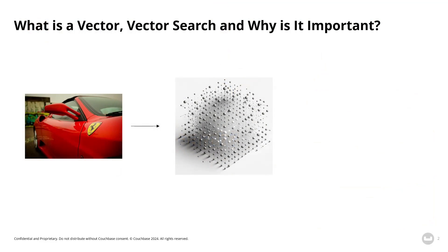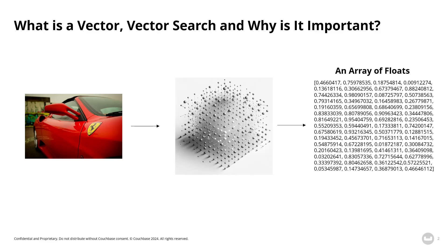So what's a vector, what's vector search, and why is it important? Vectors or vector embeddings are mathematical representations with many dimensions that capture the meaning and context of unstructured objects, like a paragraph of text or images or even video. And computers are great at math, but they're just not really good at handling complex objects. So vector search is the process of creating a vector using a model like an LLM and storing it as an array of floats, and then being able to search for those vectors and their nearest neighbors.